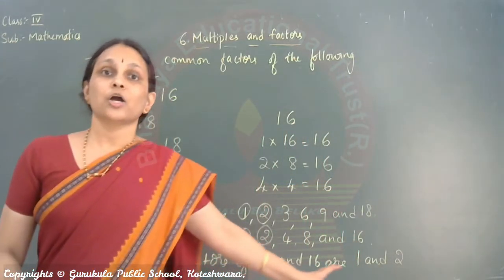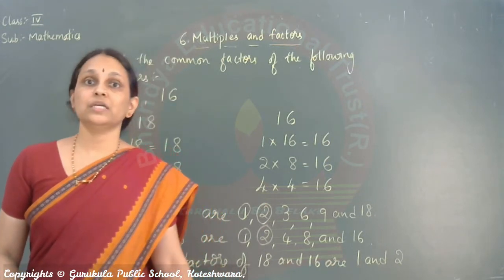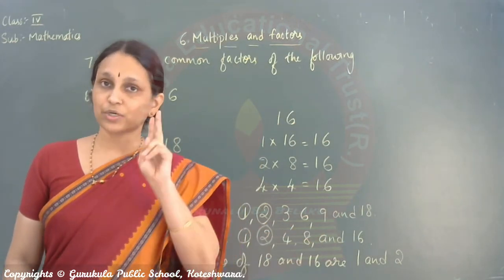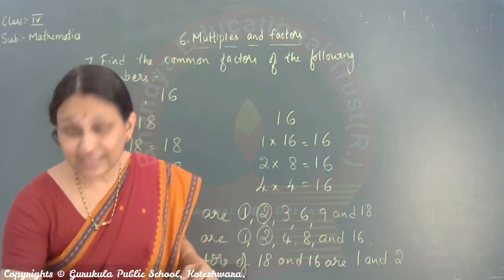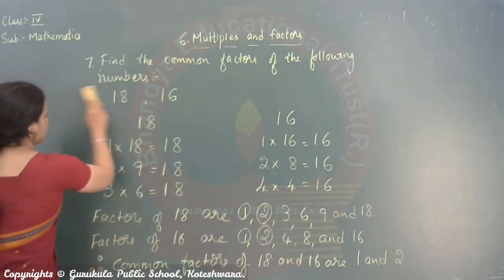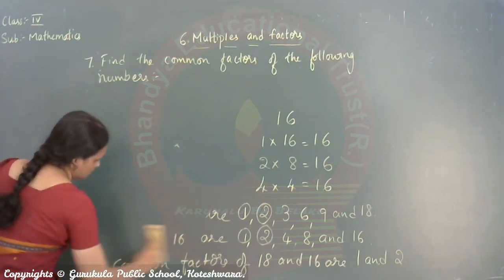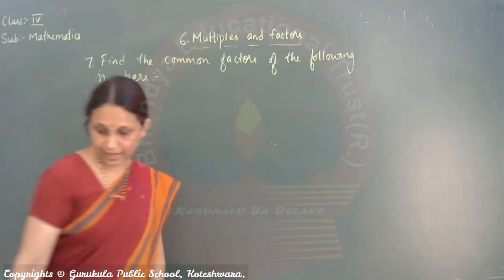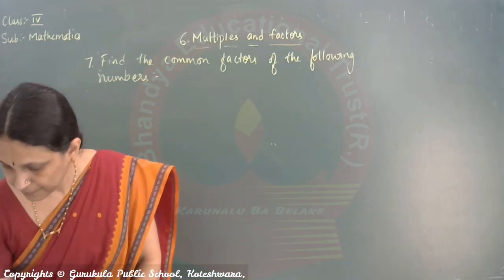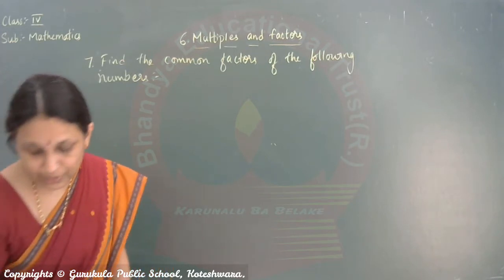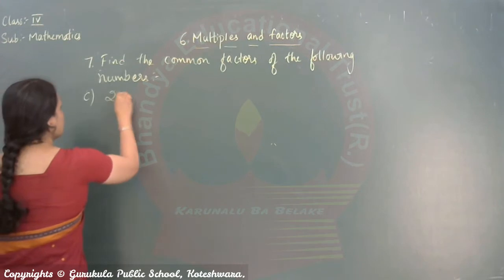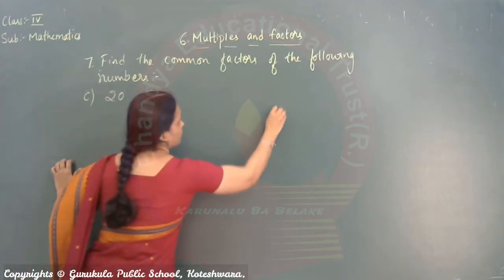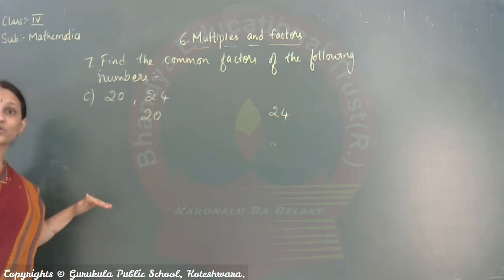So this is how you find common factors. Any 2 or maybe 3 numbers also you can. Here I am teaching you only common factors for 2. Okay. Now some extra sums I would like to give. You can take down. Next sum. You can take down. It is 20 and 24. Let us do this. Yes. 20. Write down the factors for 20.